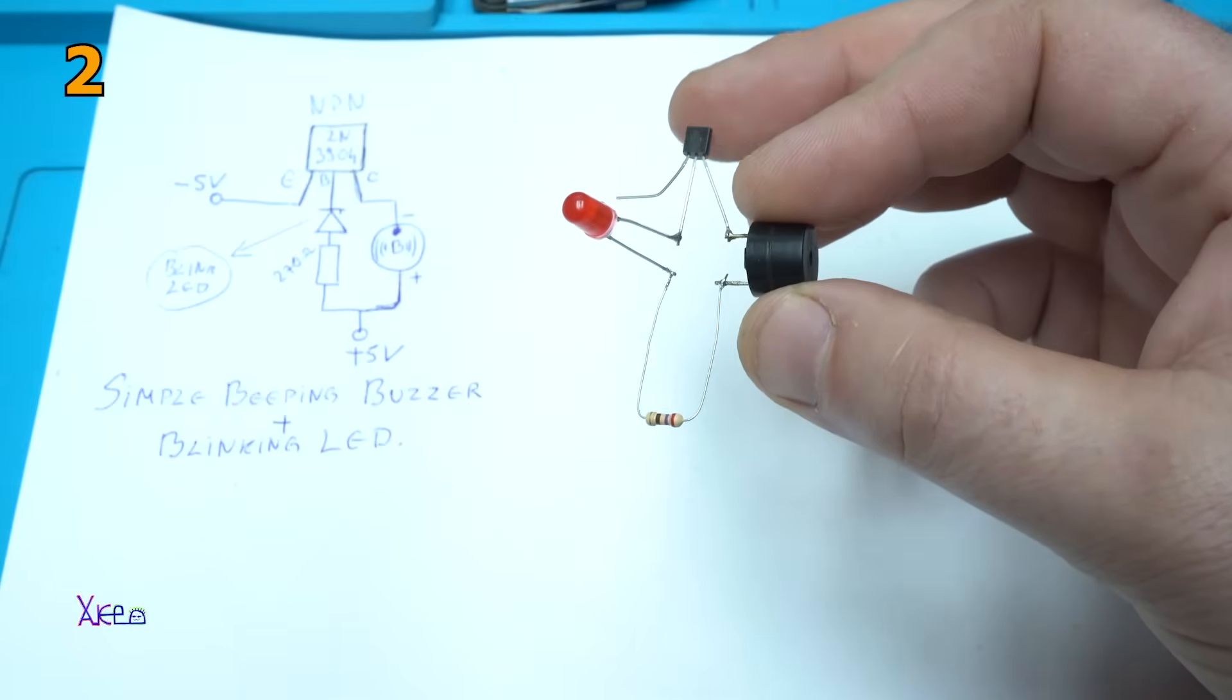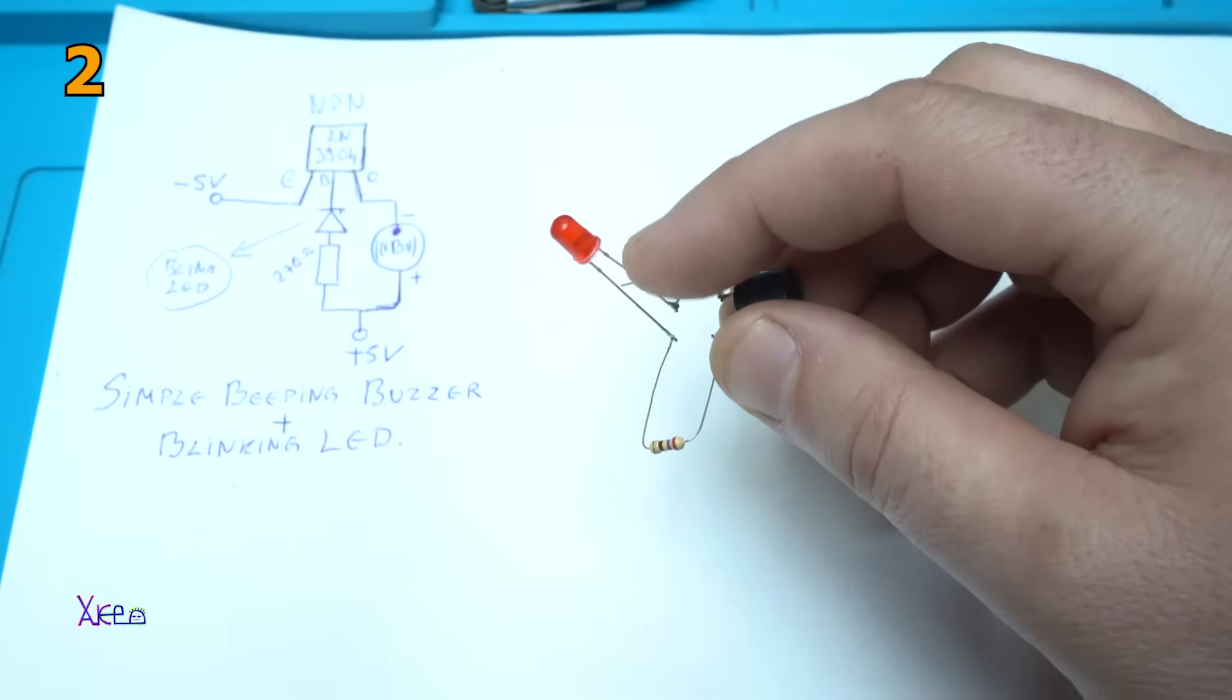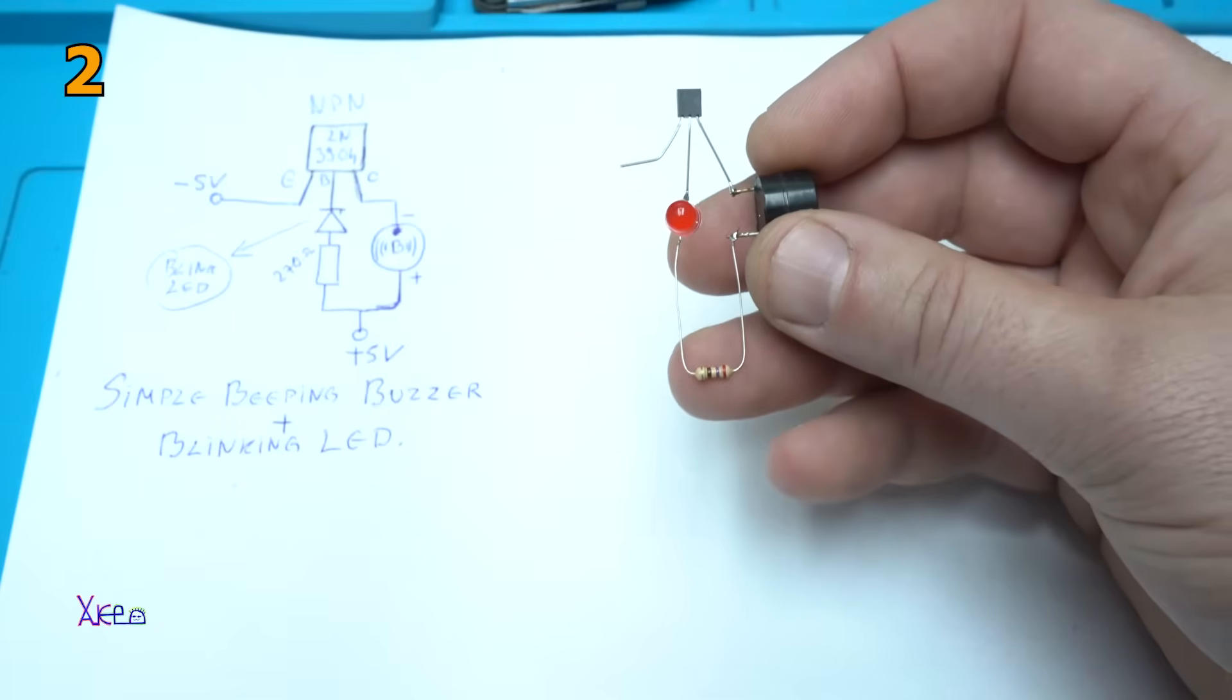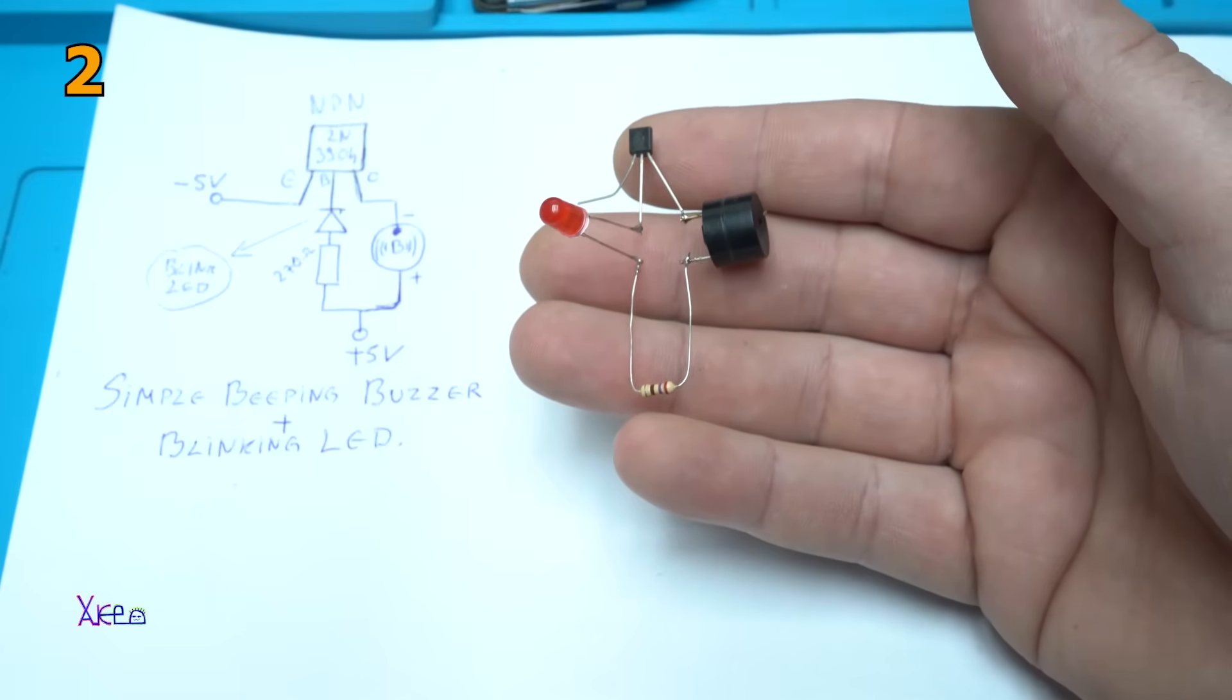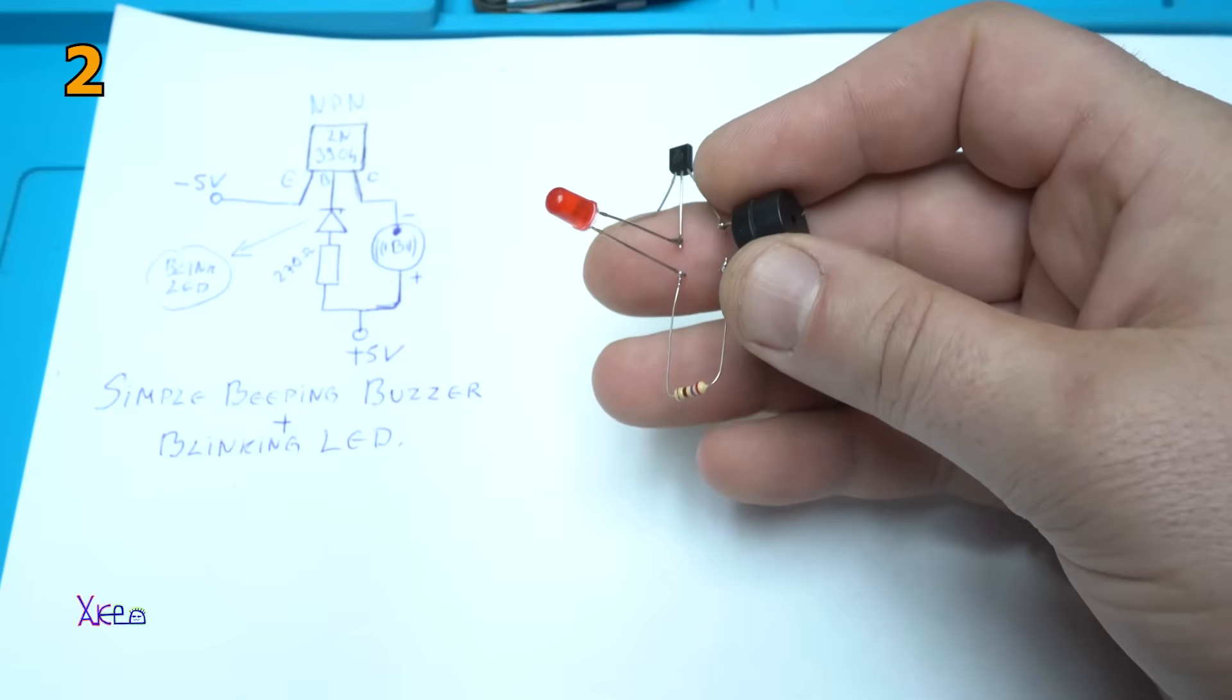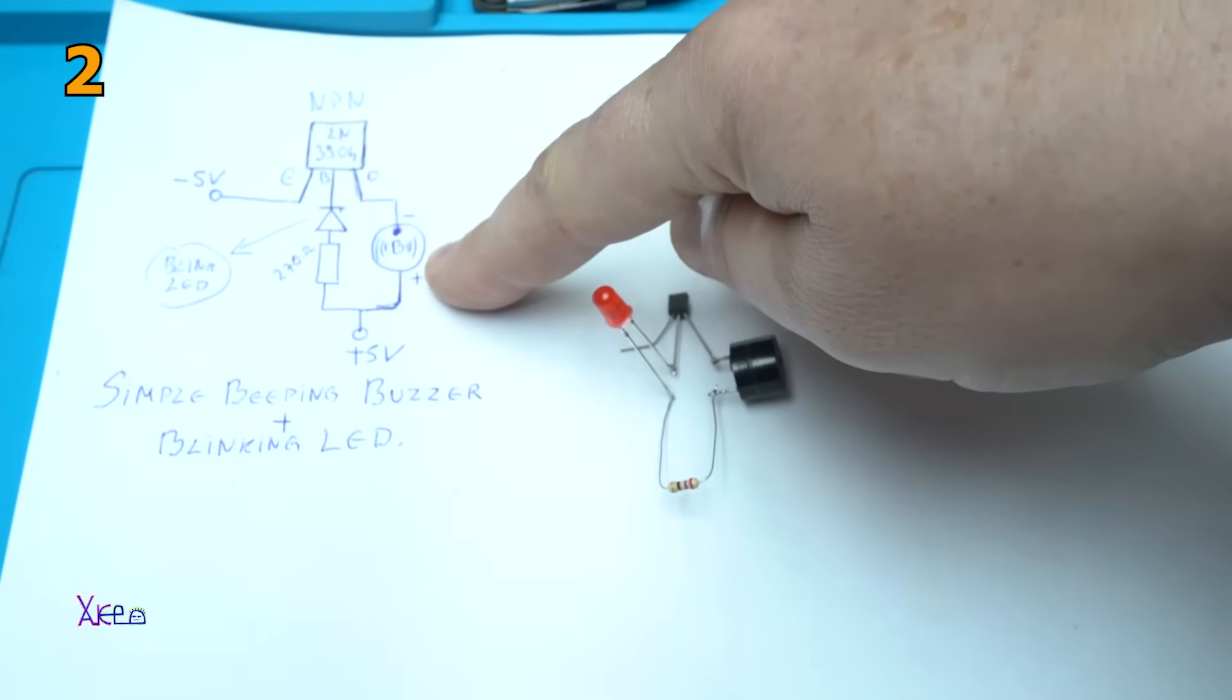Yes, you need one NPN transistor, one blinking LED, one active buzzer, and one resistor of 270 ohms. It's a simple beeping buzzer plus blinking LED, and later I'm going to show you one crazy effect using another LED. Here is the circuit diagram.